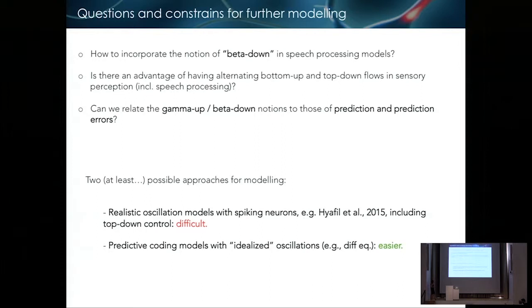Okay, so now how to incorporate the notion of beta down in speech processing models? This is the question we asked in the lab. Is there an advantage of having alternating bottom-up and top-down flows? Can we relate gamma up, beta down notions to the notion of prediction and prediction errors? Because this is a purely physiological scheme. But if you listen to people like Karl Friston, you should find a way to connect the two worlds and see whether you have the down-going flow is actually a predictive flow and the feed-forward flow of prediction errors. This is really still a big field of research. Okay, so we think that there are two at least possible approaches.